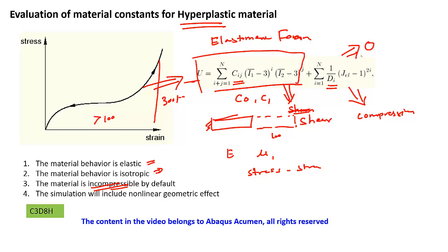There are many different models available: Mooney-Rivlin, Neo-Hookean, Ogden — you can use any of them. If you want to use a solid element you have to use a hybrid element. You can see there is an 'H' in the element name — for example, C3D8H is the continuum eight-noded hybrid element. This hybrid element handles the fully incompressible behavior required for hyperelastic models.